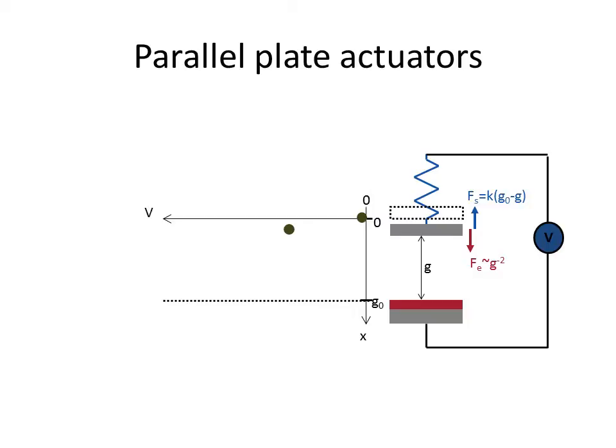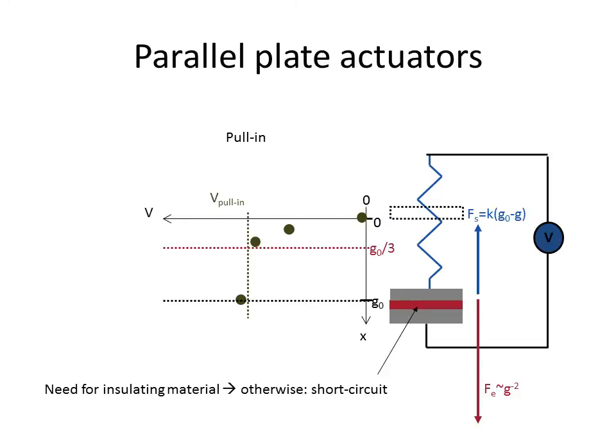So I increase a little bit more my voltage here to the point where it has traveled one third of the total distance g. Once it has traveled one third then it comes to this bifurcation point and the whole system snaps down.